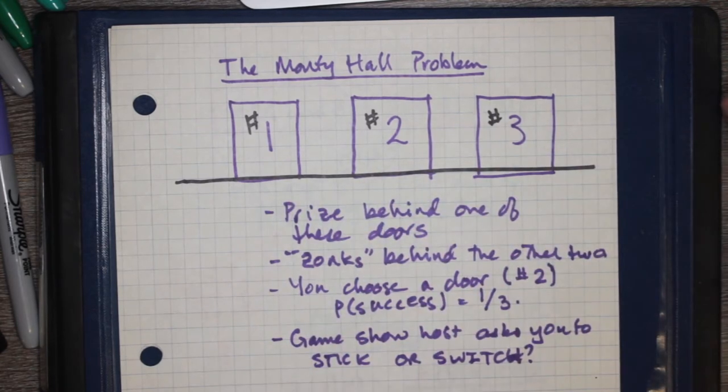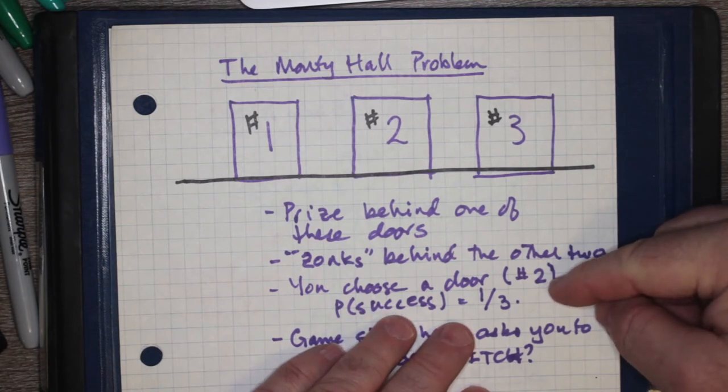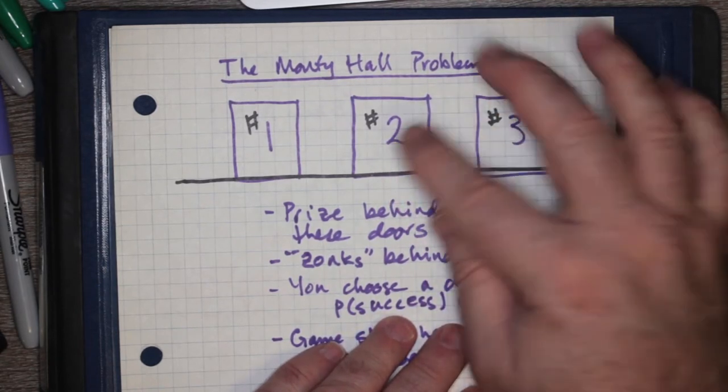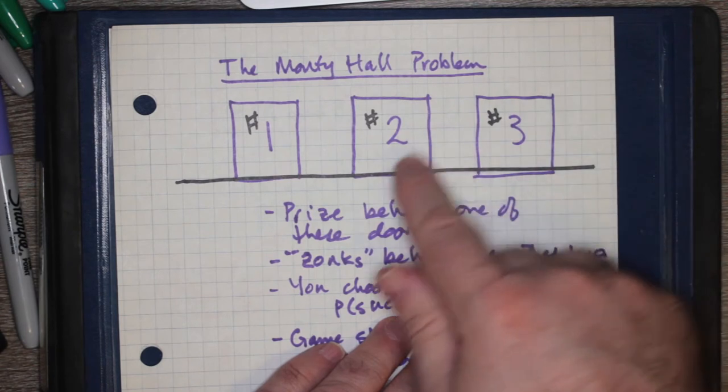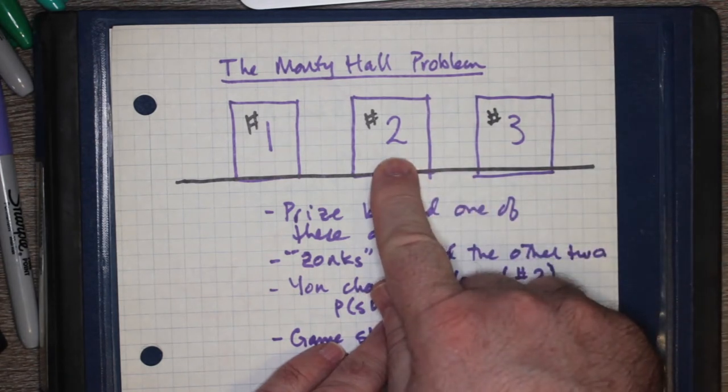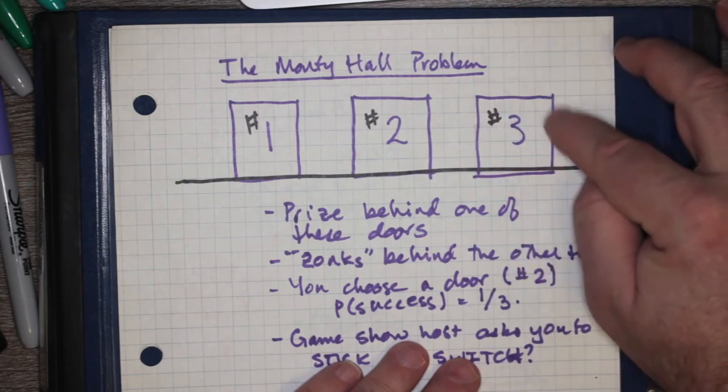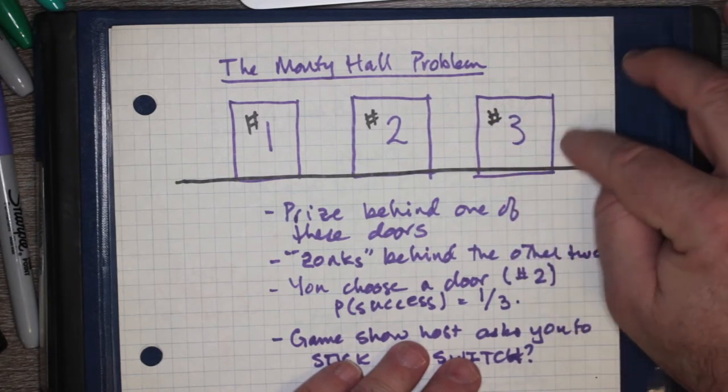So let's say you choose door number two. As you know from just basic probability, the probability of success is one over three, but you're guessing door number two.